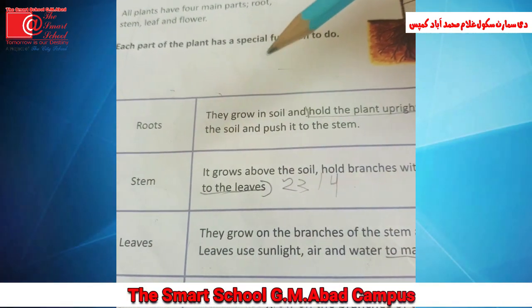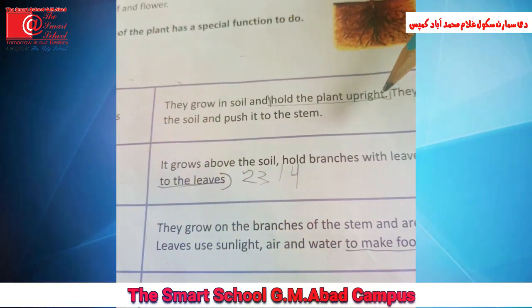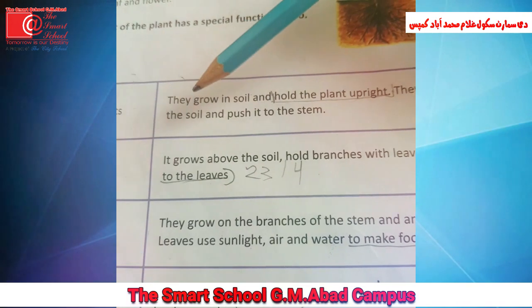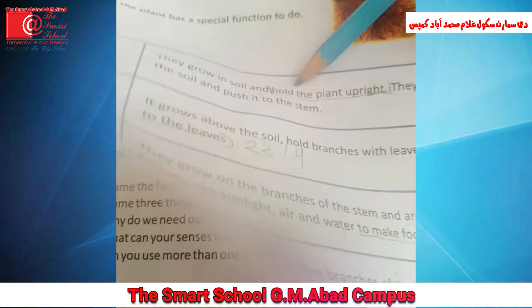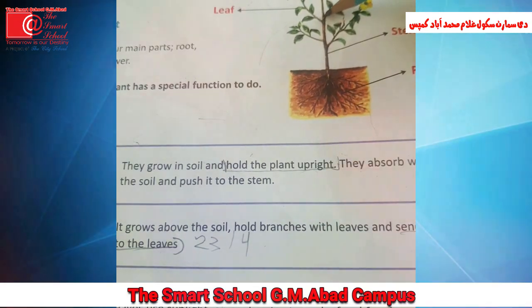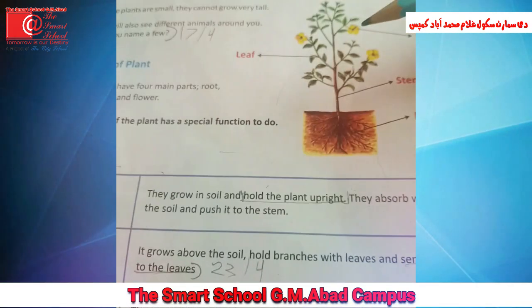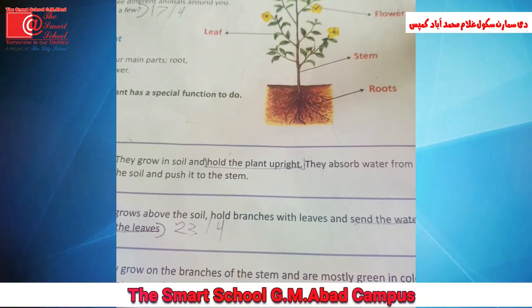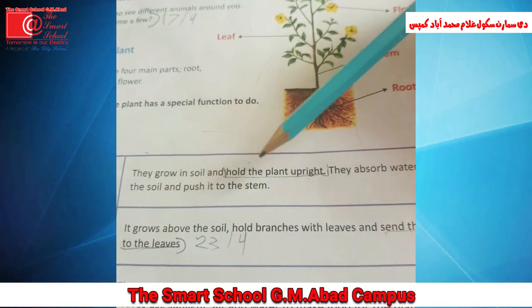First one is Roots. They grow in soil and hold the plant upright. Roots بچو وہ زمین کے اندر grow ہوتی ہیں اور پودے کو اوپر کی طرف سیدھا رکھتی ہیں۔ جیسے ہی پودا زمین کے باہر آتا ہے تو یہ اس کو help کرتی ہیں کہ وہ سیدھا کھڑا رہے۔ They absorb water from the soil. یہ زمین سے پانی کو جذب کرتی ہیں، and push it to the stem.